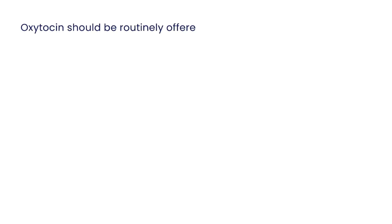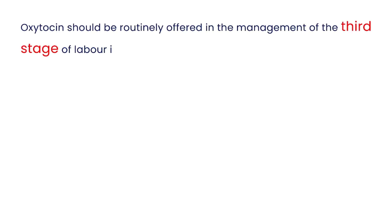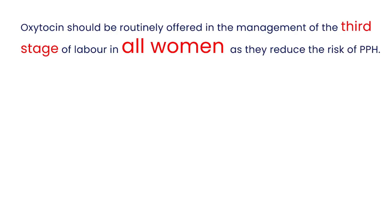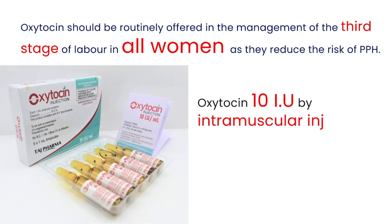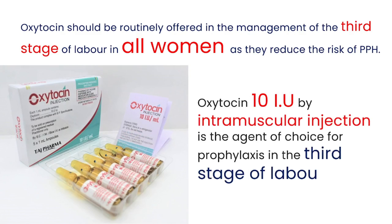Prophylactic uterotonics, such as oxytocin, should be routinely offered in the management of the third stage of labor in all women, as they reduce the risk of PPH. For women without risk factors for PPH delivering vaginally, oxytocin 10 international units by intramuscular injection is the agent of choice for prophylaxis in the third stage of labor. A higher dose of oxytocin is unlikely to be beneficial.